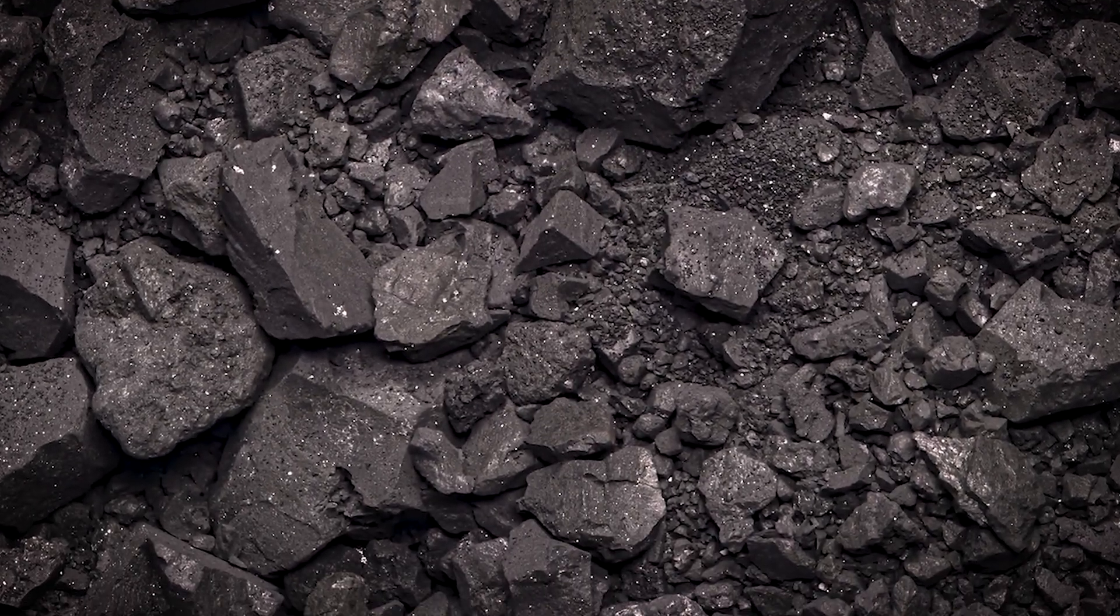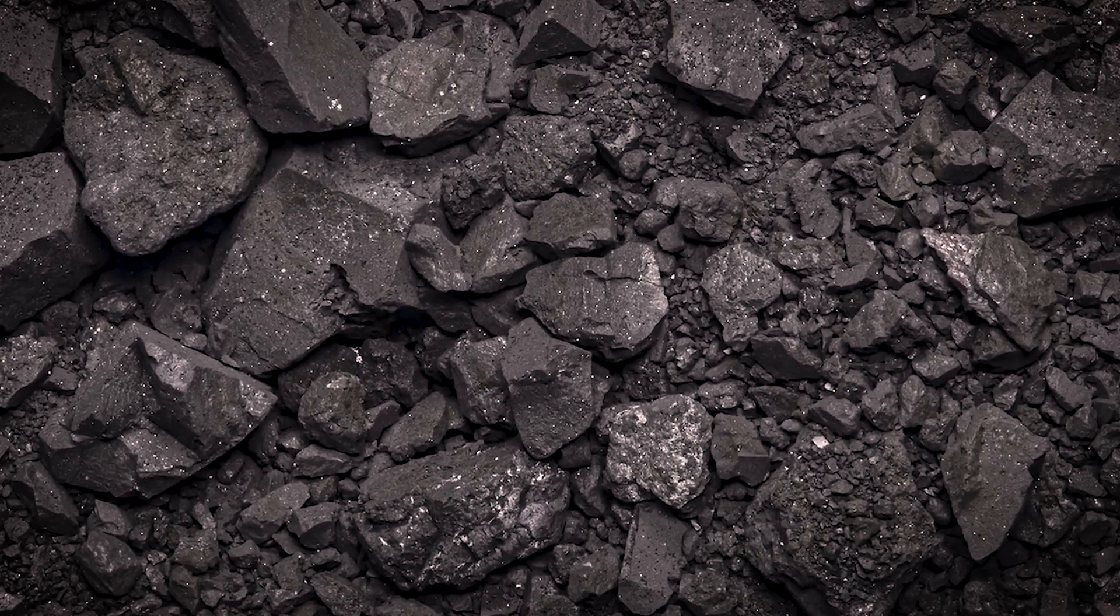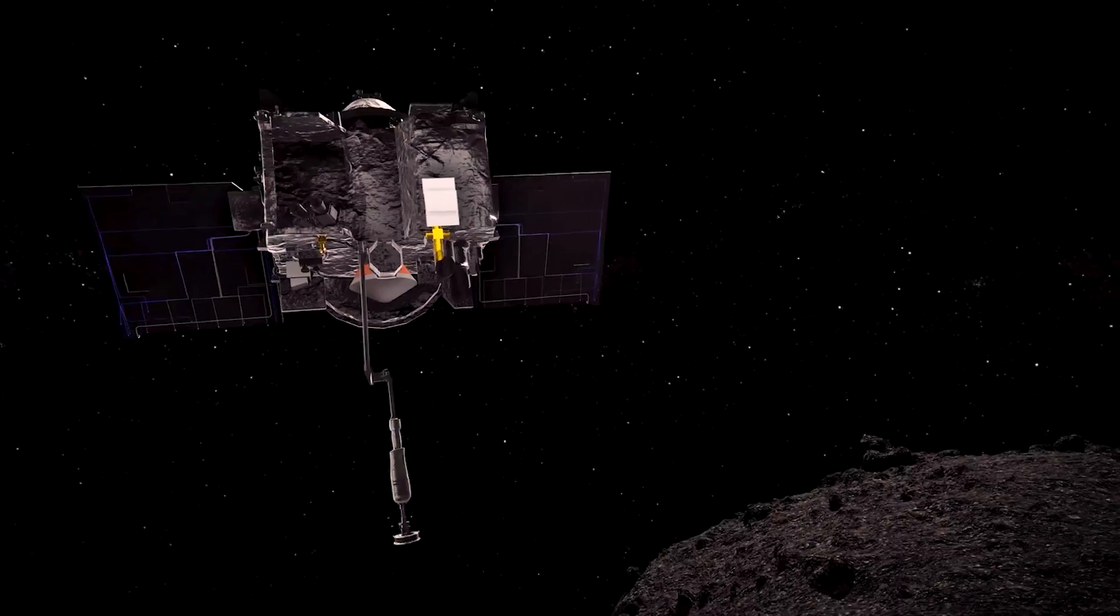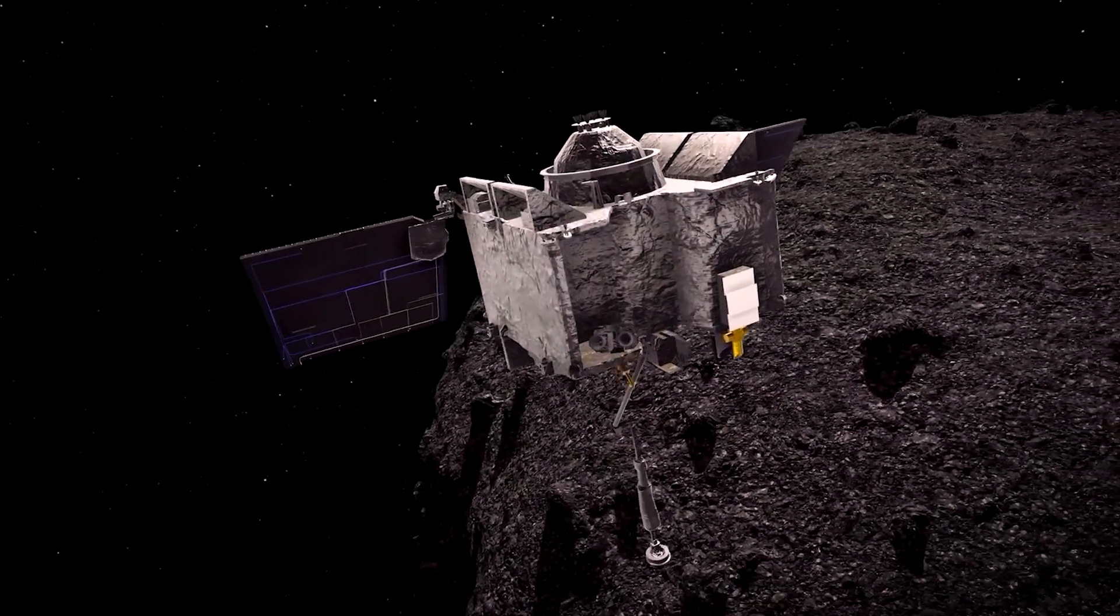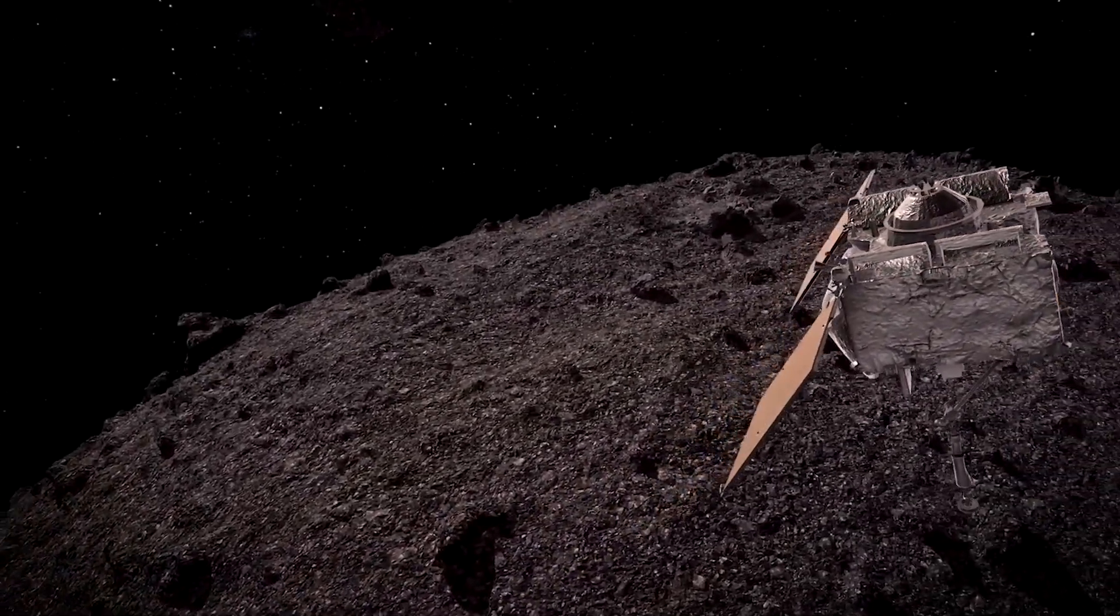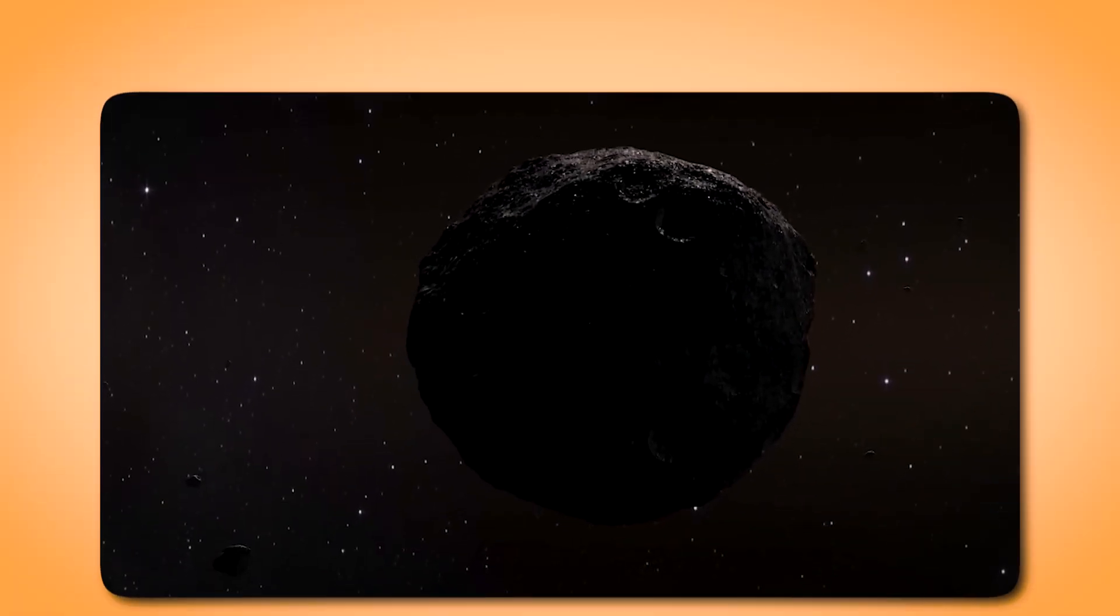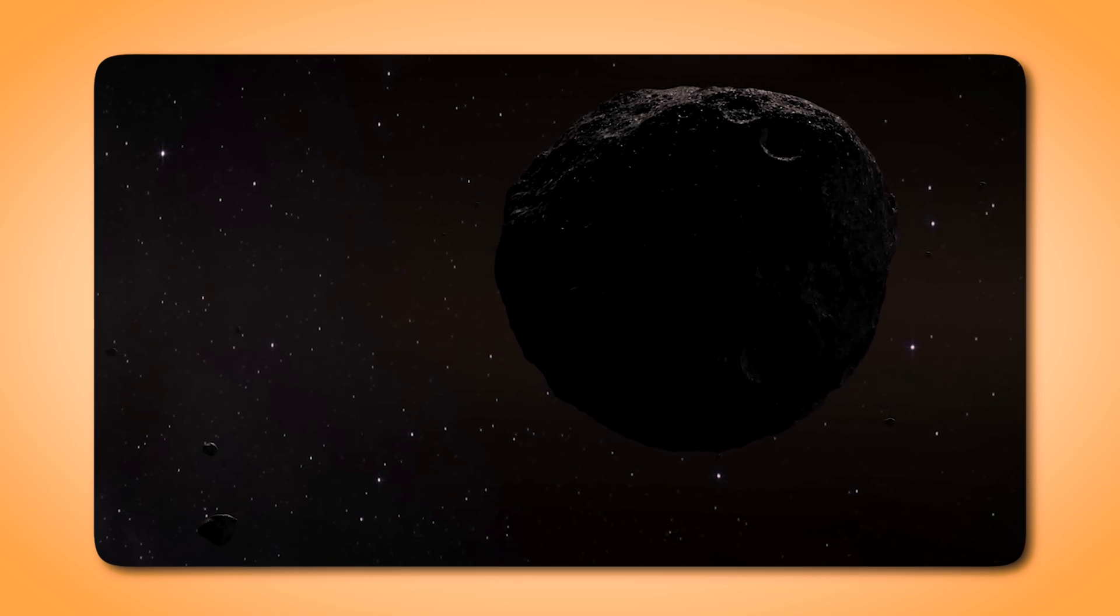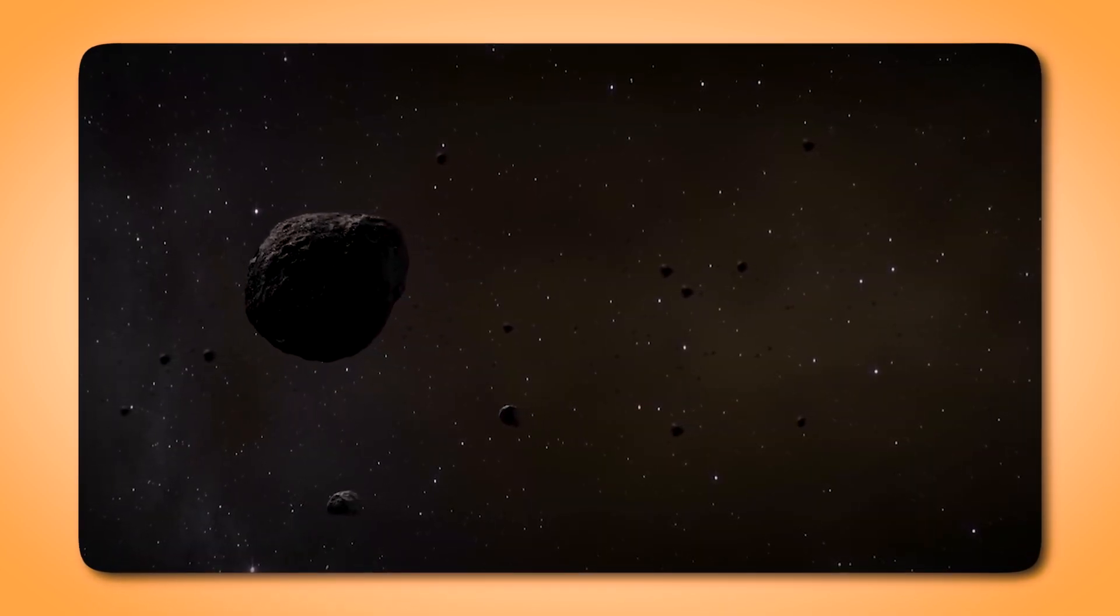Among these minerals is serpentine, which resembles rocks found at mid-ocean ridges on Earth, areas where molten material rises from the mantle and interacts with seawater to create new crust. Additionally, Bennu's regolith contains pyrrhotite, an iron sulfide mineral often associated with hydrothermal vents on Earth. These discoveries suggest that Bennu's parent body experienced processes similar to those on Earth, hinting at an active past shaped by water and heat.